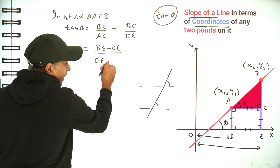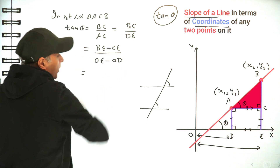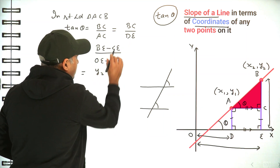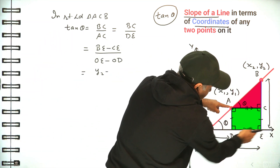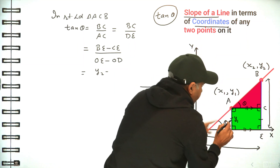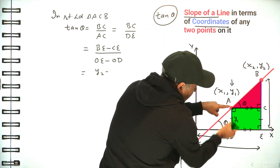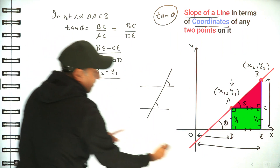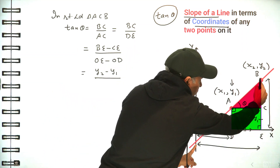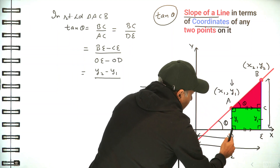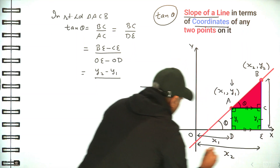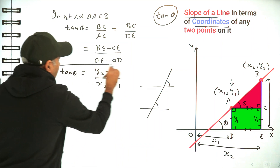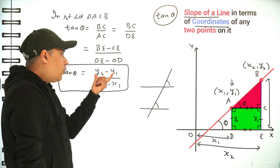DE equals OE minus OD. BE is the y-coordinate of point B, which is y2. CE equals AD, and AD is y1, the y-coordinate of point A. OE is the x-coordinate of B, which is x2, and OD is the x-coordinate of A, which is x1. So this gives us (y2 minus y1) divided by (x2 minus x1).